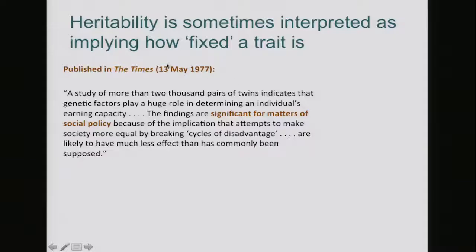The way the Times of London interpreted this very large study of twins is that the finding — that income level is heritable — is a significant matter of social policy because it implies that we can't make society more equal. That is, we can't equalize income levels because they're somehow coded in our genes. So the finding that income levels were heritable meant that we couldn't change income levels, that they're somehow predestined in our genes. Not the case.